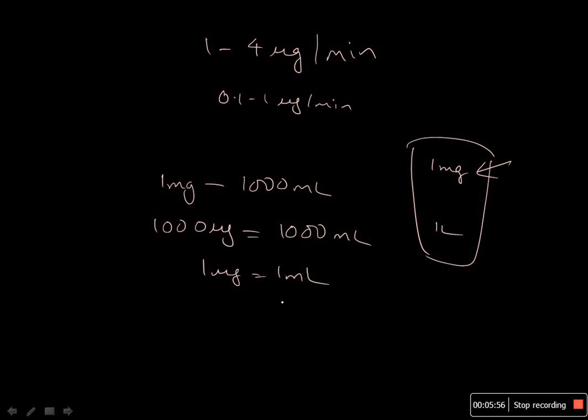And simply you start dripping this at 1 ml per minute—the dose will be 1 microgram per minute. Generally you have to give 20 drops per minute to set up a concentration of 1 microgram per minute. This was about the dose of adrenaline.